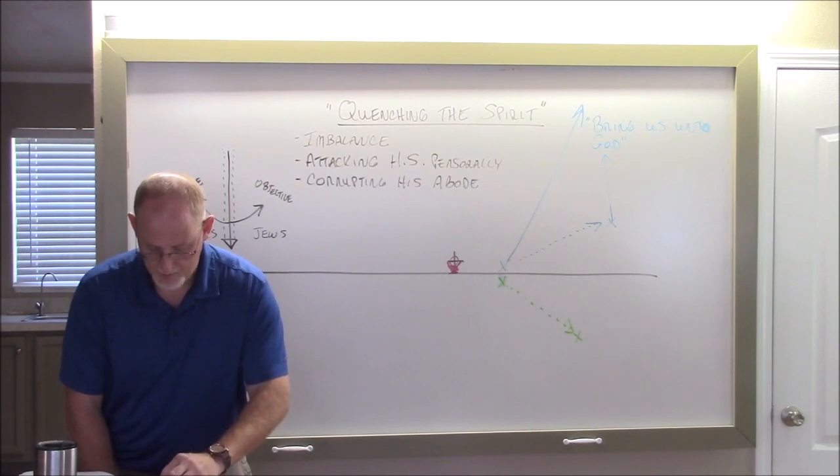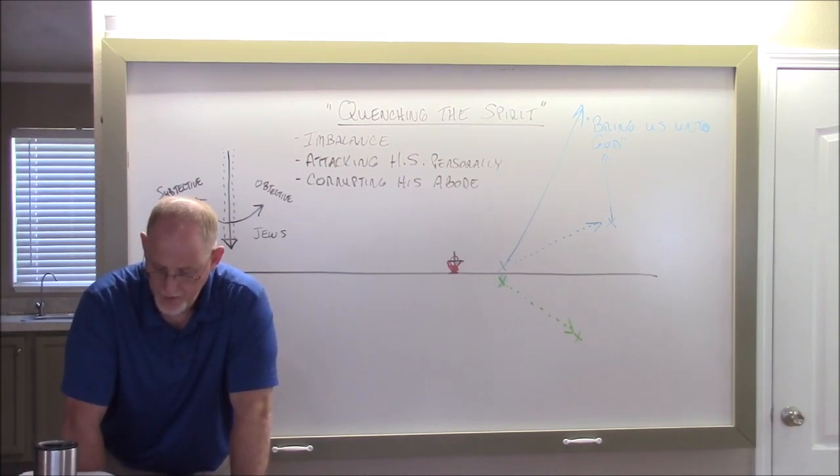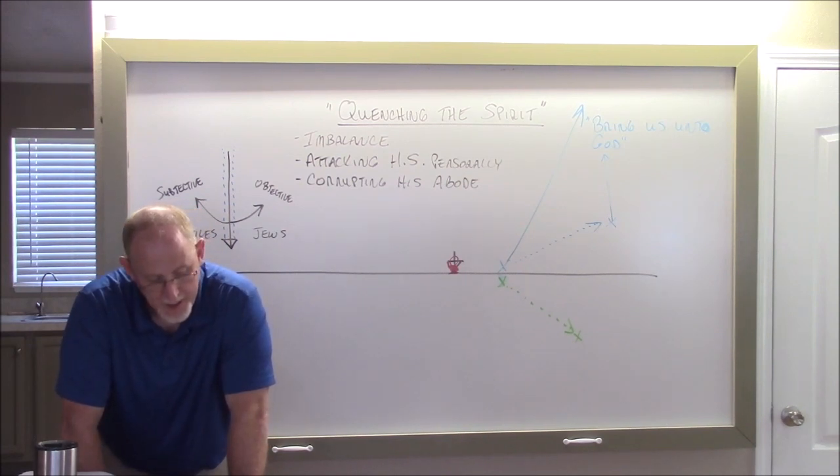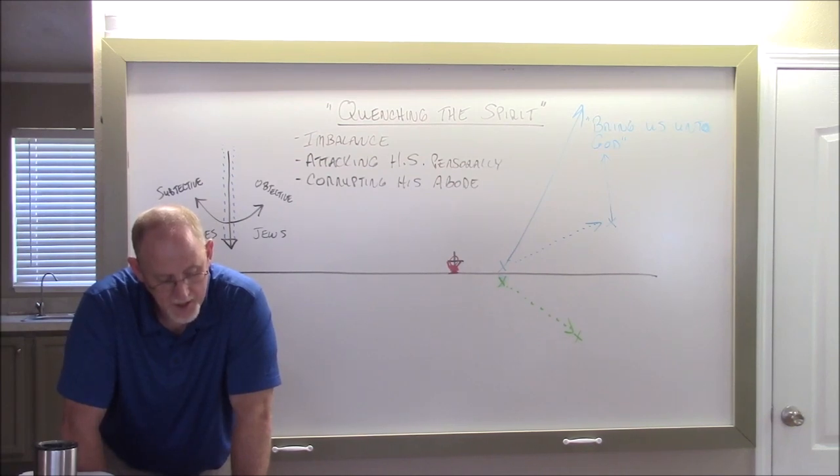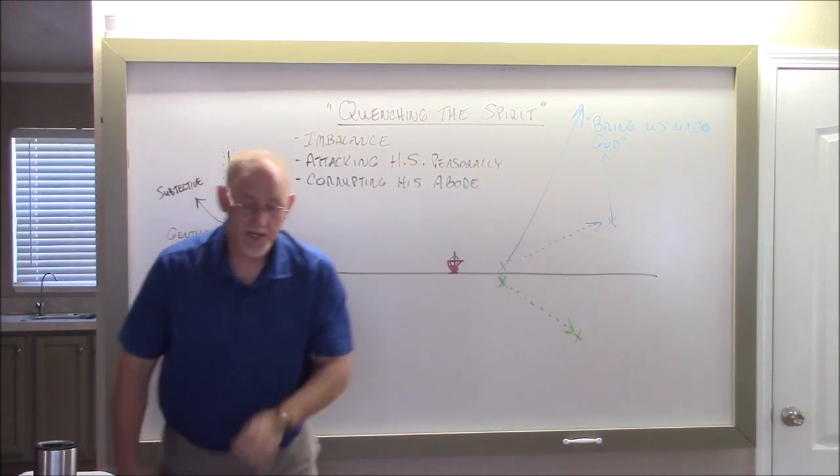Go to 2 Timothy 2. And 2 Timothy 2, verse 19. Paul says, Nevertheless, the foundation of God's hand is sure having this seal. The Lord knoweth them that are His. Let everyone that nameth the name of Christ depart from iniquity. Now watch the explanation. In a great house there are not only vessels of gold and of silver, but also of wood and of earth, some to honor, some to dishonor. If a man therefore purge himself from these, he shall be a vessel unto honor, sanctified and meet or fit for the Master's use and prepared unto every good work. So, are we to keep our vessels prepared? But can we corrupt them? Look at the next verse. Flee youthful lusts. Then what would the youthful lusts do? Corrupt the vessel.